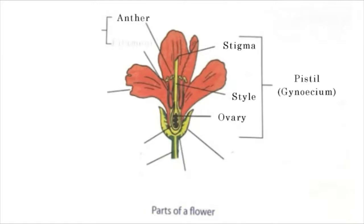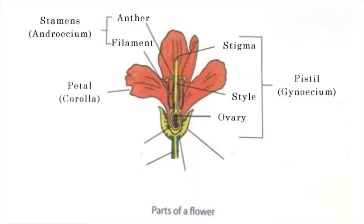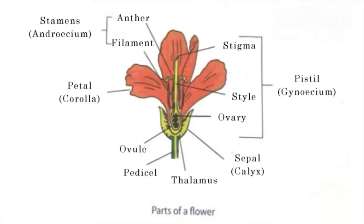Anther, Filament — these two are called Stamens, or Androecium. Petal, that is Corolla. Ovule and Pedicel. Here is the Thalamus. Sepal, that is Calyx. These are called the parts of a flower.